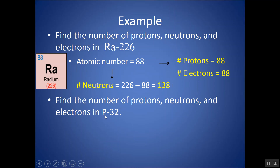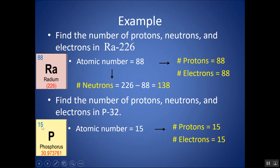Find the number of protons, neutrons, and electrons in P-32. If I look up phosphorus, it has an atomic number of 15, so there are 15 protons and 15 electrons. To get neutrons, I take the mass number given in the problem statement — 32 — not the atomic mass of 30.9 from the periodic table. I never look up mass number in the periodic table. So 32 minus 15 gives 17 neutrons.